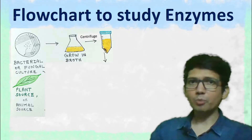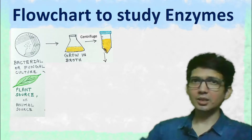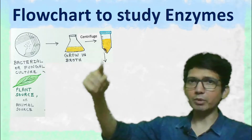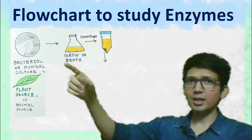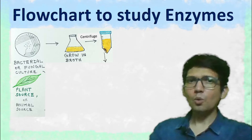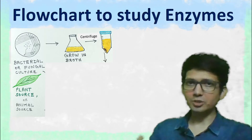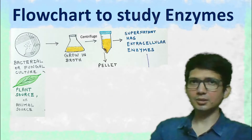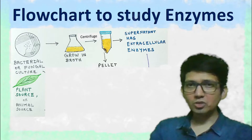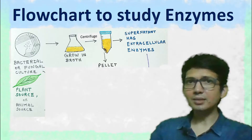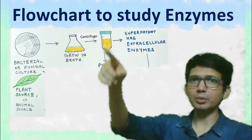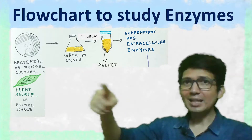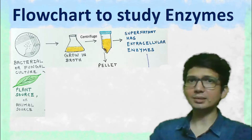In case of microbial culture, the colony is first inoculated in liquid broth and allowed to grow. Once the culture grows, it is centrifuged. The extracellular enzymes will be present in the supernatant, whereas the pellet will have the biomass.